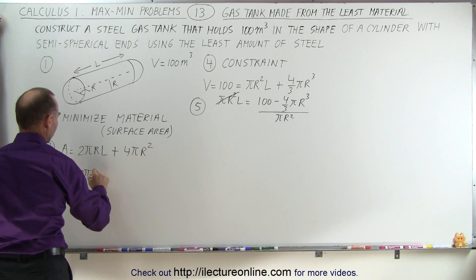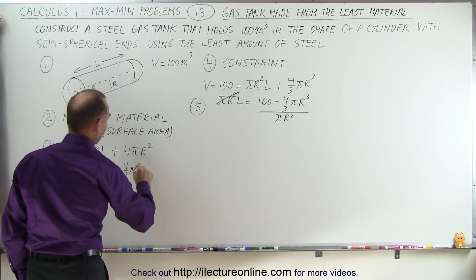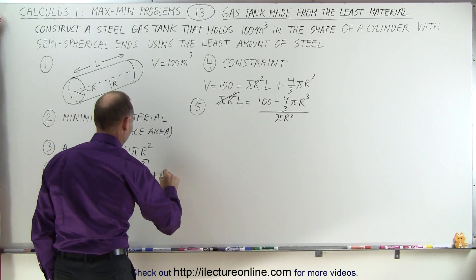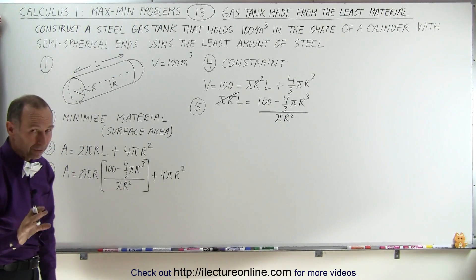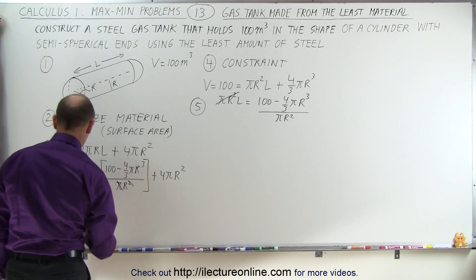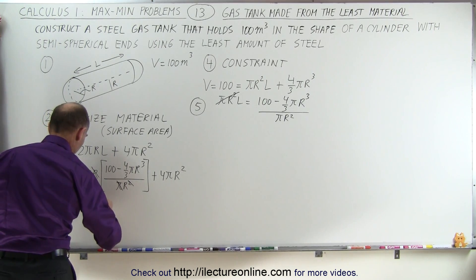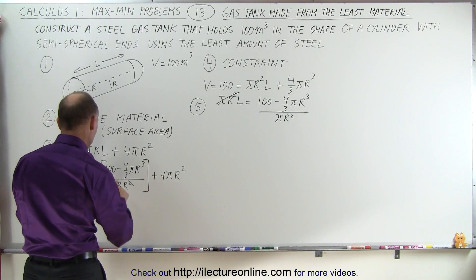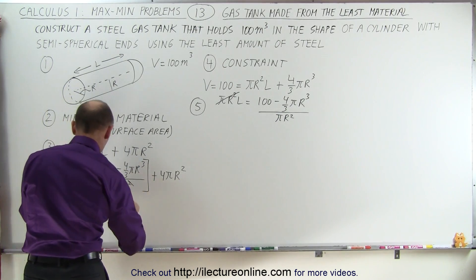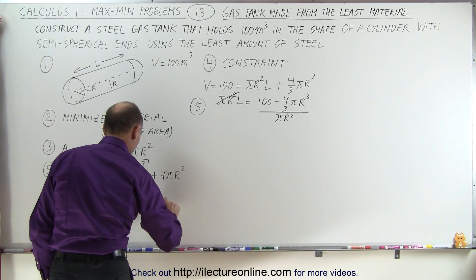The area is equal to 2πr times l, and l can be written as [100 minus (4/3)πr³] divided by πr², plus 4πr². We have a pi here and a pi there, and an r cancels out one of those r's. We can write it out: A equals 200 divided by r — or 200r⁻¹ — and then 2 times that term gives minus (8/3)πr², plus 4πr².